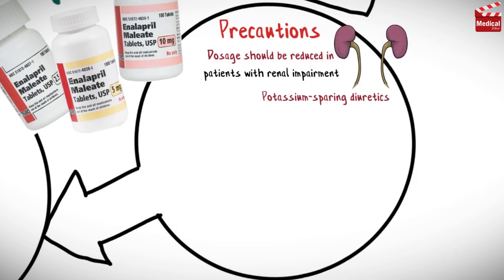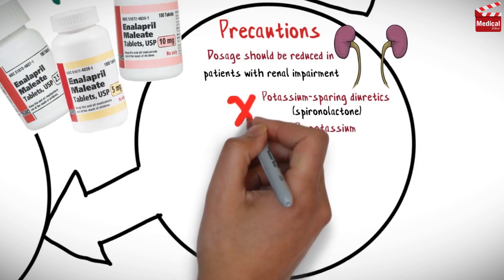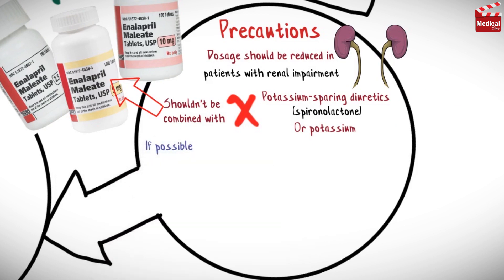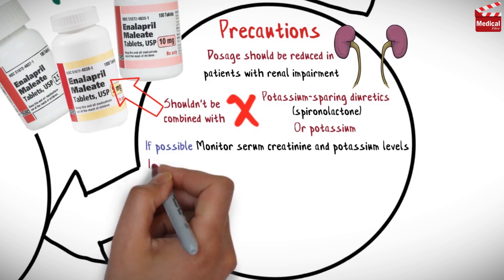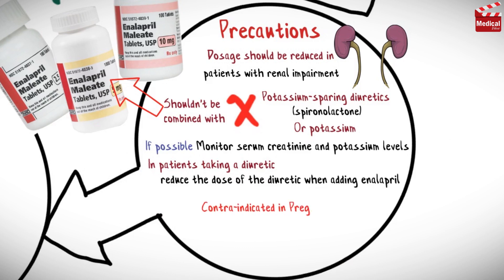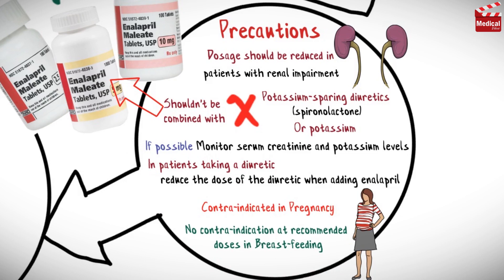Potassium-sparing diuretics such as spironolactone, or potassium supplements, shouldn't be combined with enalapril. If possible, monitor serum creatinine and potassium levels. In patients taking a diuretic, reduce the dose of the diuretic when adding enalapril. Enalapril is contraindicated in pregnancy, and there is no contraindication at recommended doses in breastfeeding.